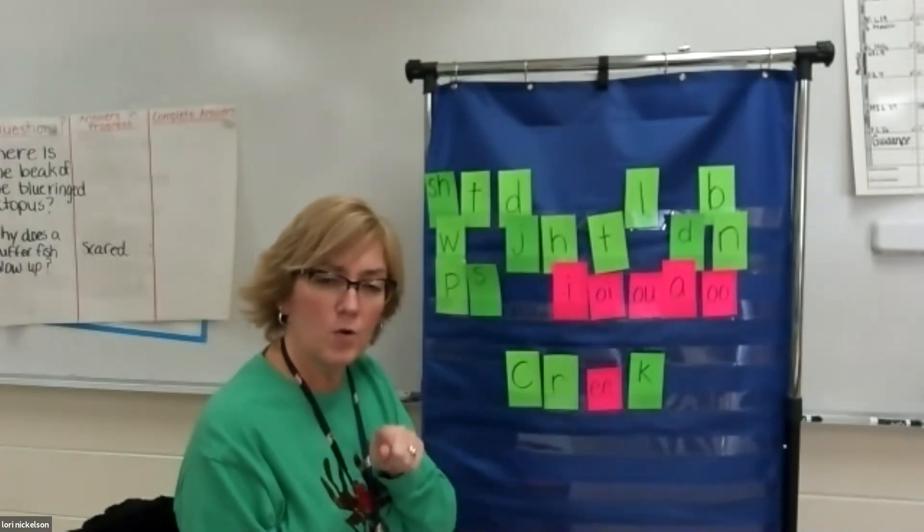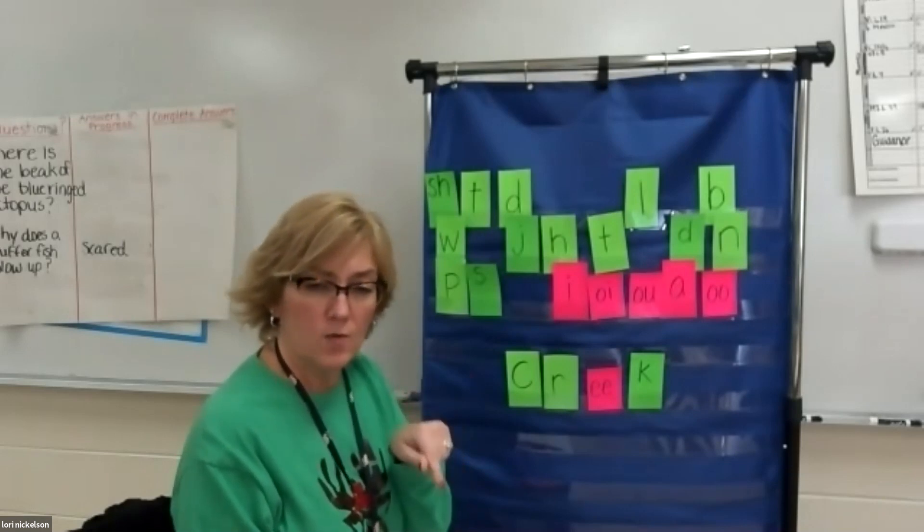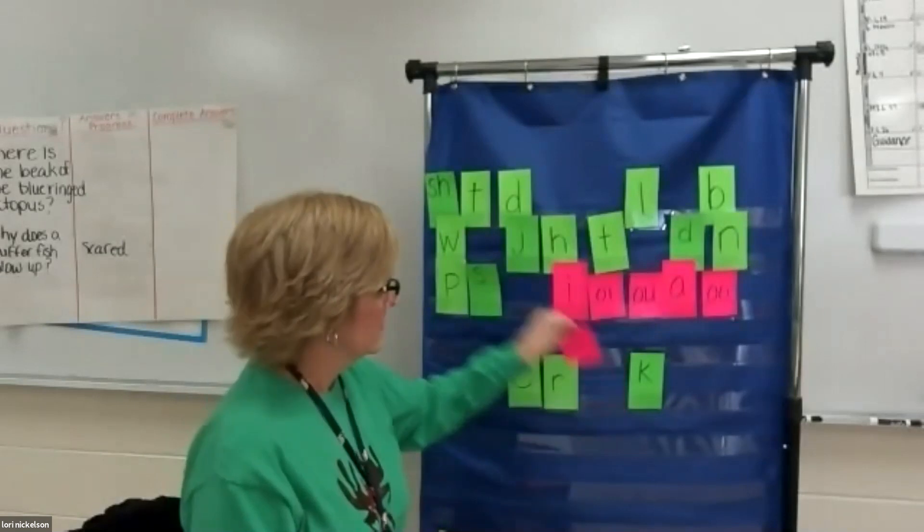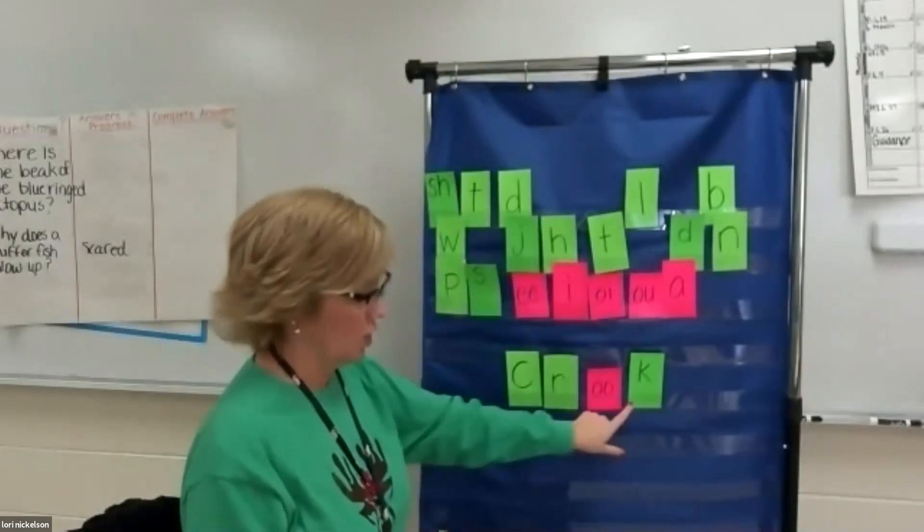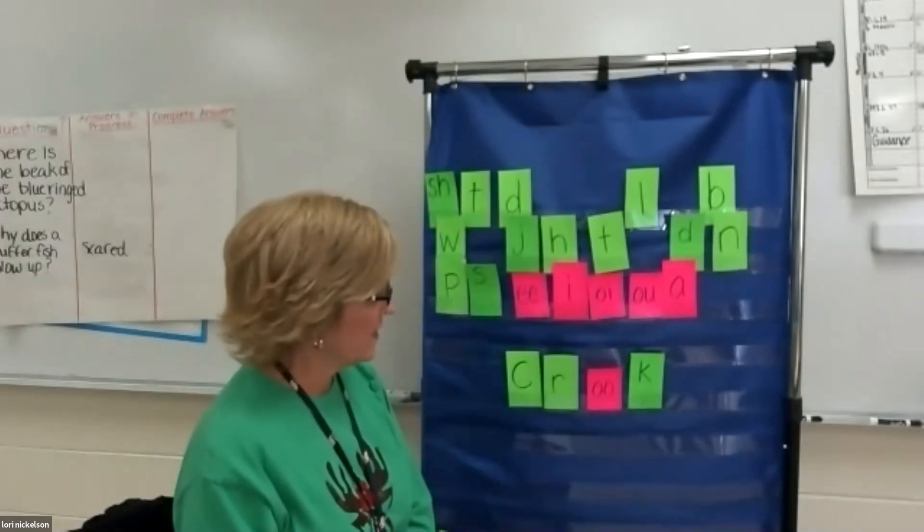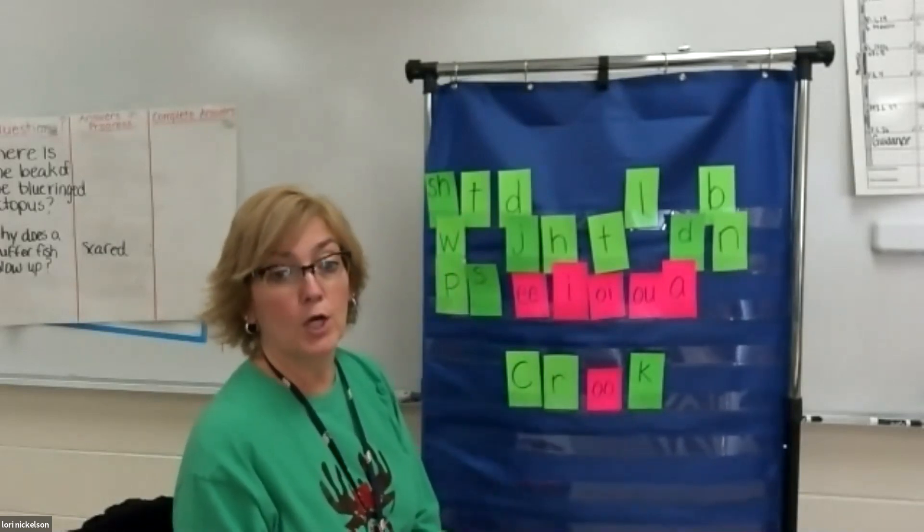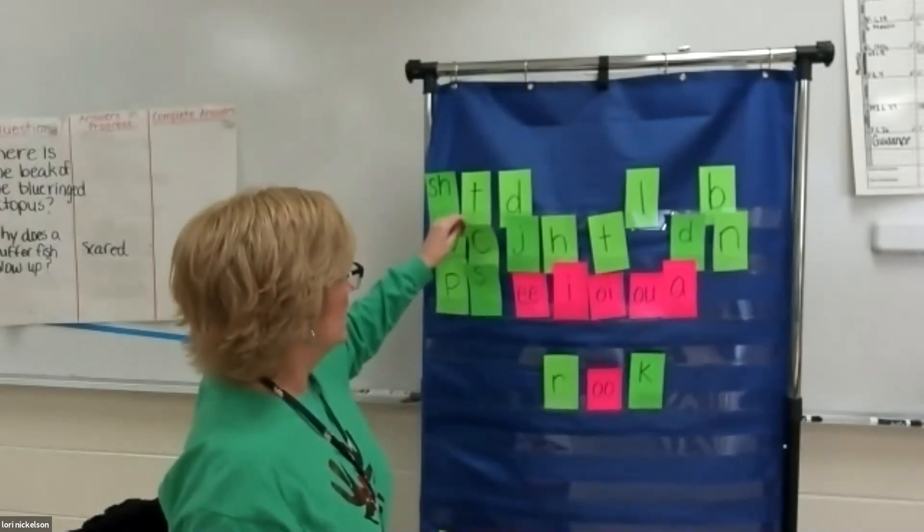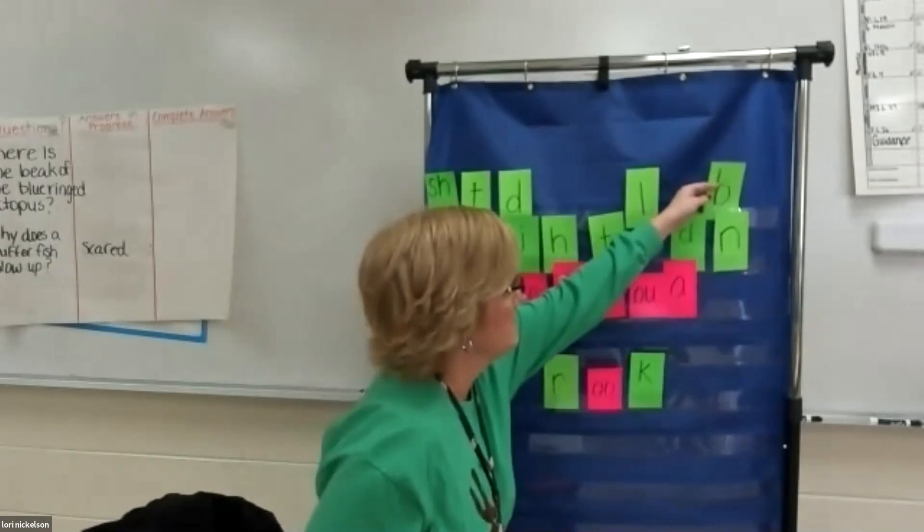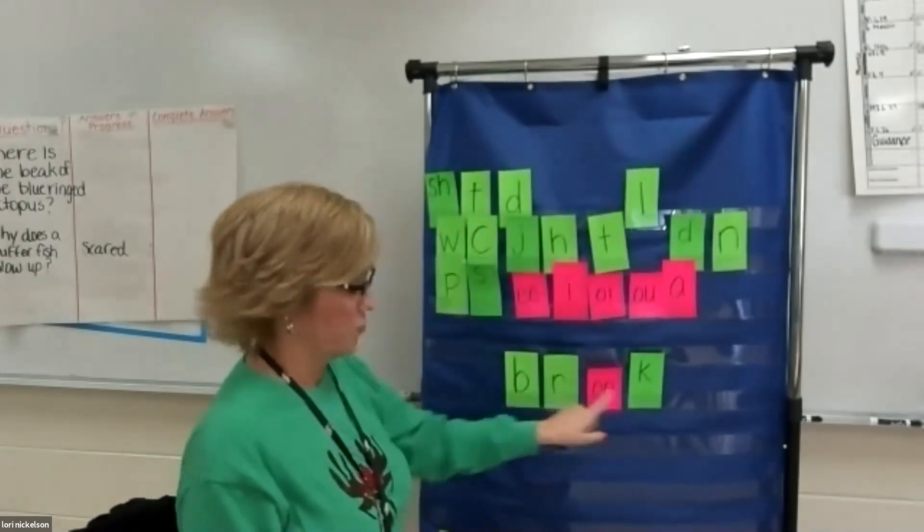So from creek, I want to make crook. So how would I make crook? What makes the oo sound? Take the E out and replace it with the double O. Crook. Awesome. So if I can make crook, I can also make brook. How would I do that? Take the C off and replace it with a B. And now I have brook. Awesome.